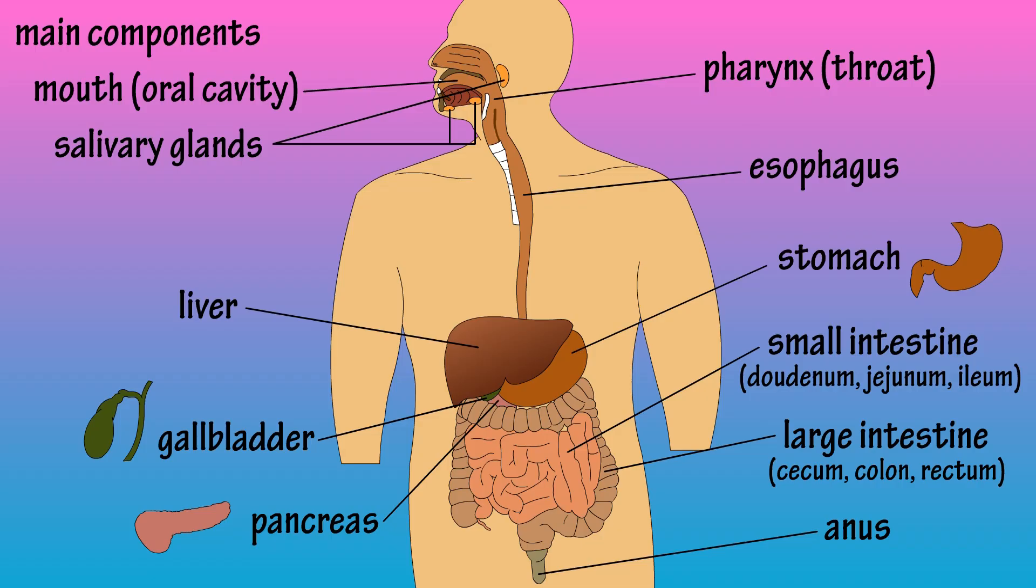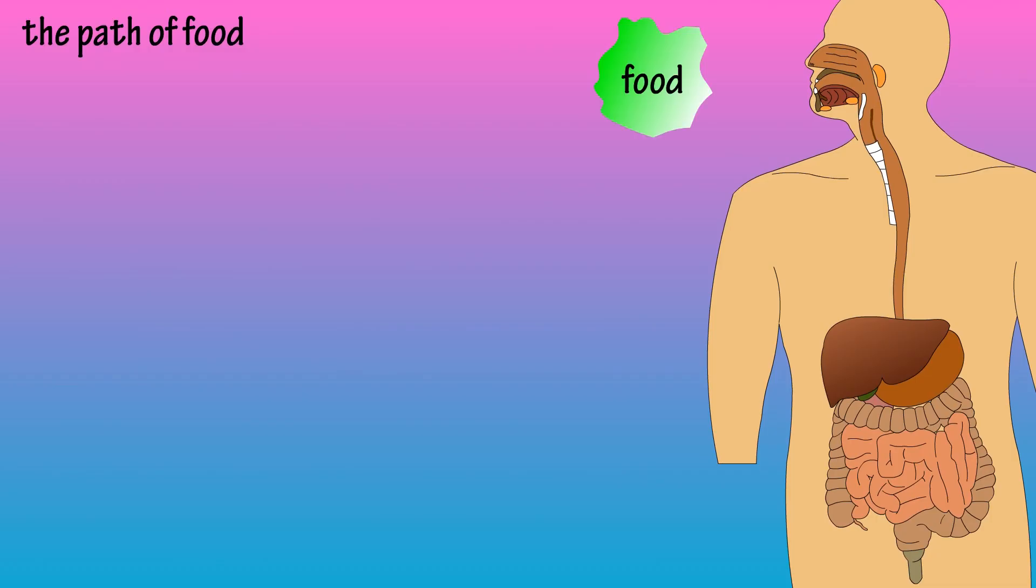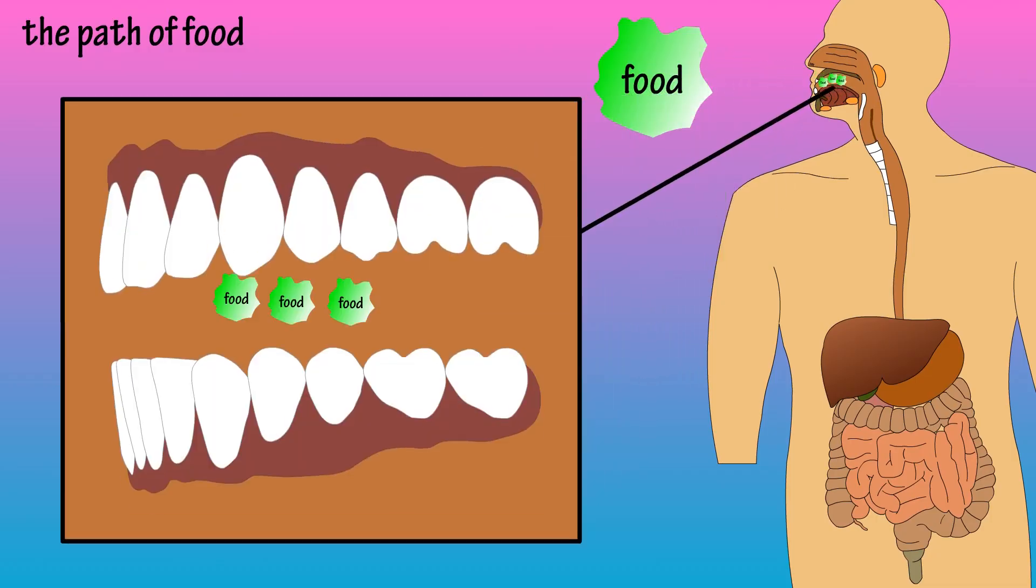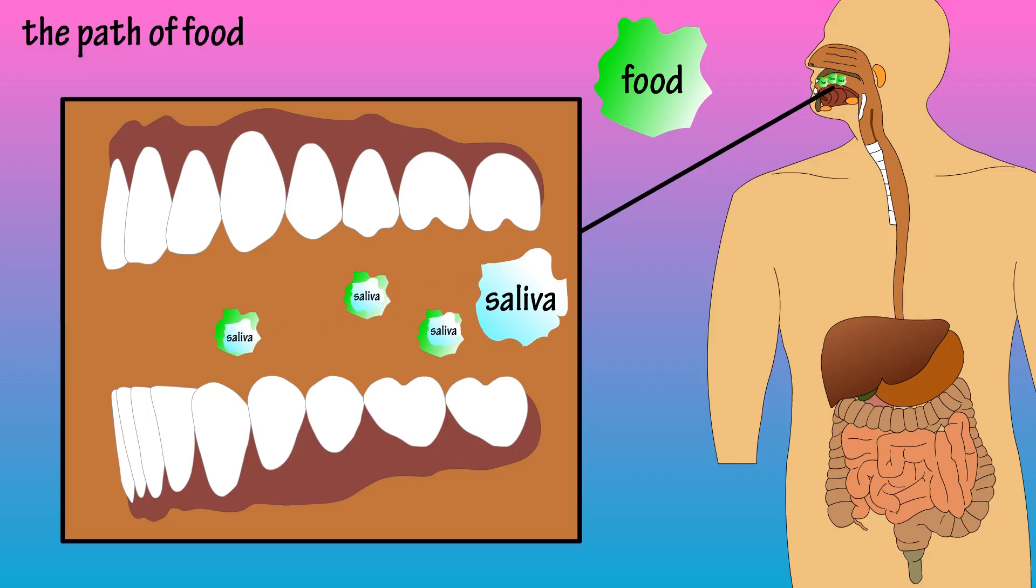Now let's go through a very basic look at what happens during the digestive process. So food enters the mouth, where we chew it up. The salivary glands produce saliva, which helps lubricate the food. The saliva also contains digestive enzymes that begin breaking down the food.